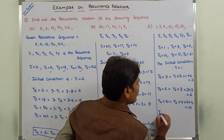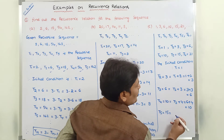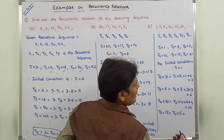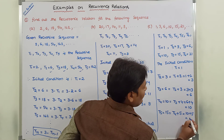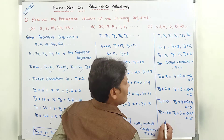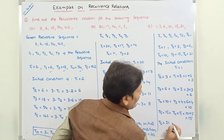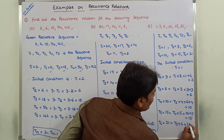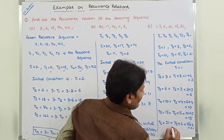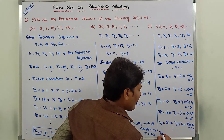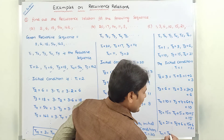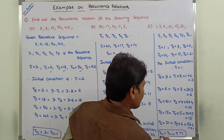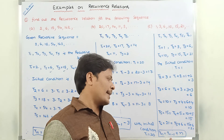T5 can be defined in terms of T4 as T4 + 5 = 10 + 5 = 15. T6 can be defined in terms of T5 as T5 + 6 = 15 + 6 = 21. The recurrence relation is Tn = T(n-1) + n.